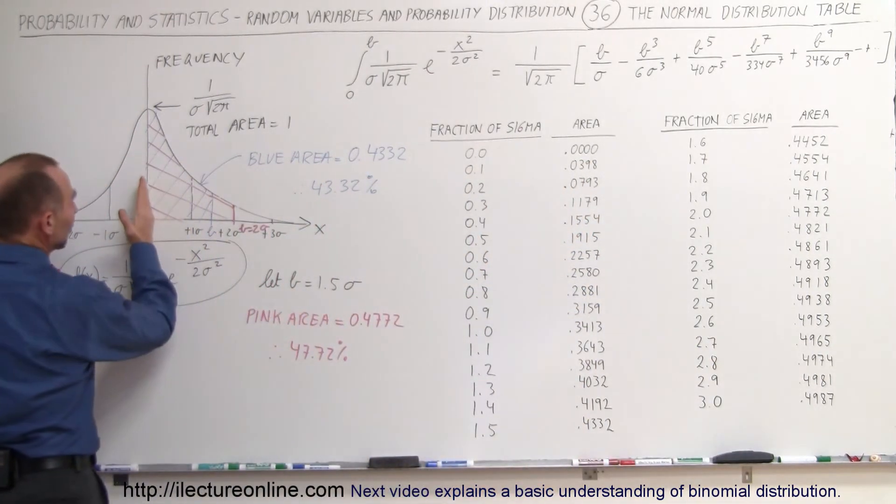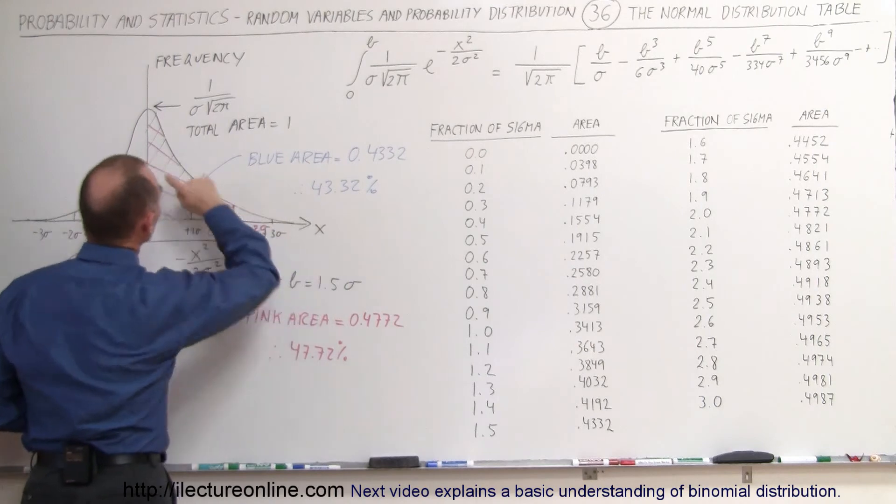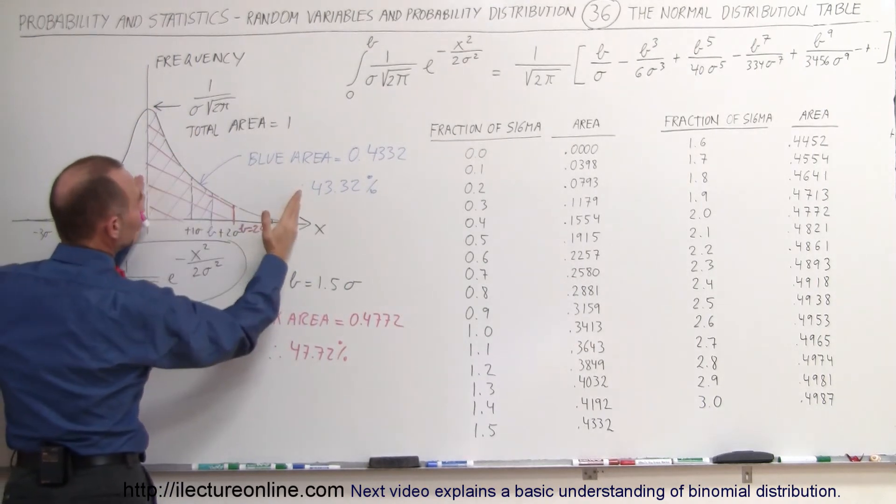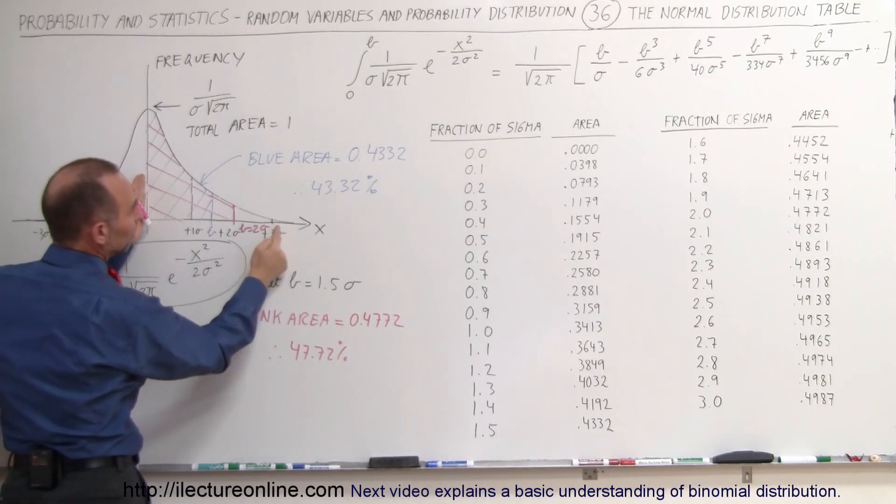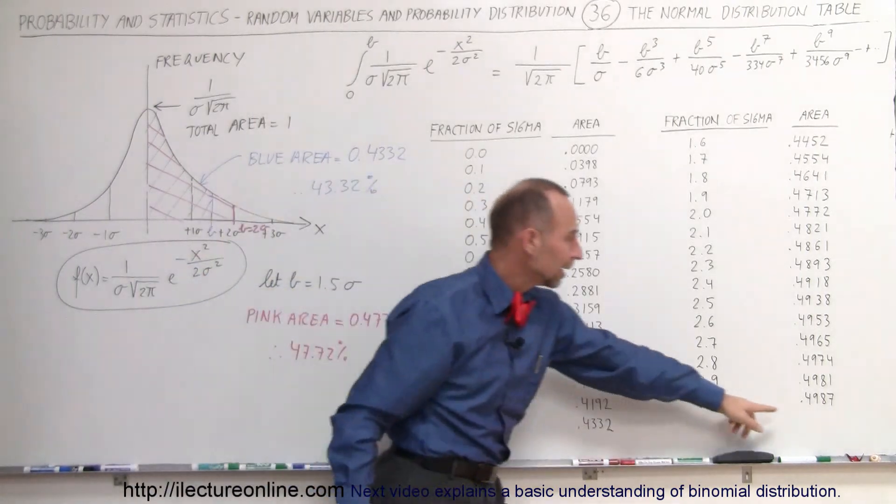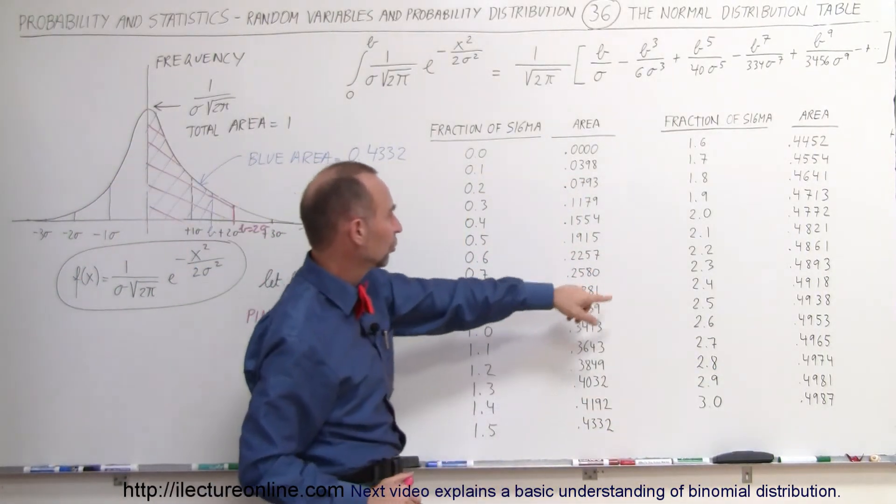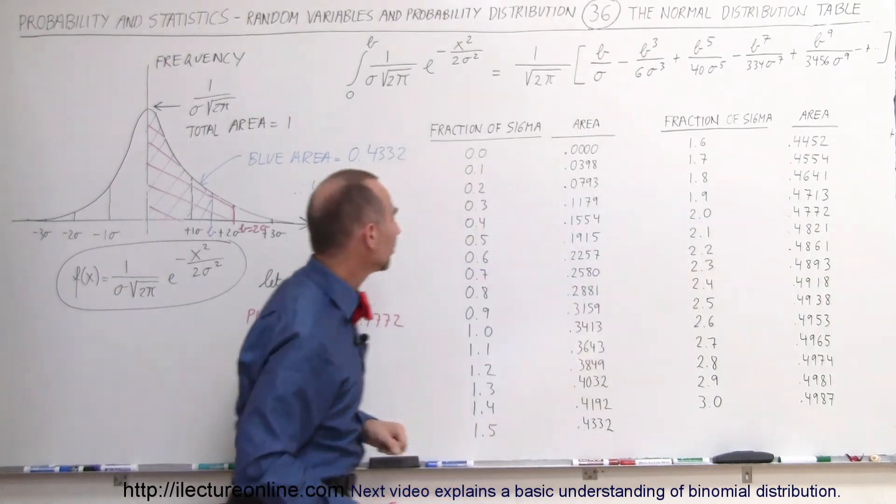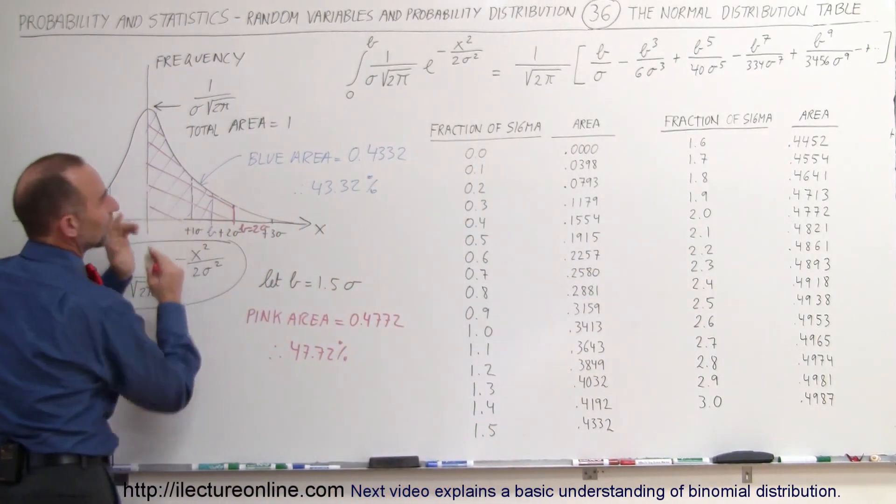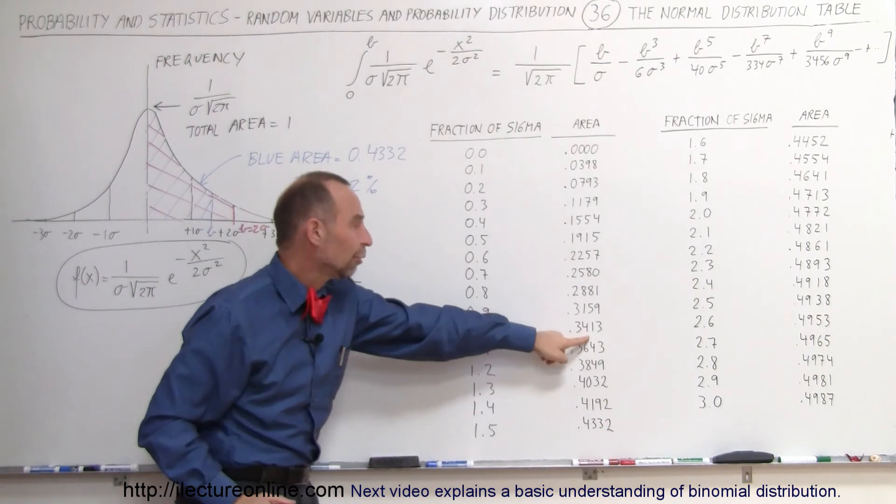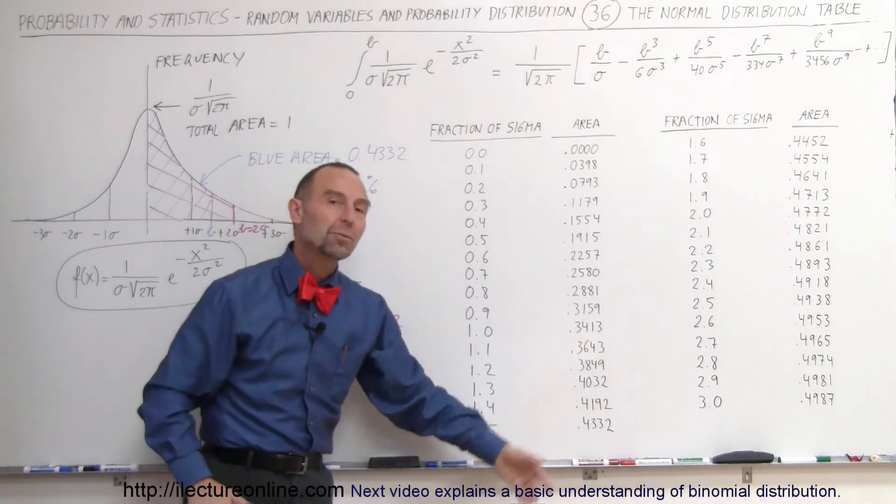And of course that makes sense, because when you go all the way out to infinity, the total area for half the curve would be one half. So when we get out to 3 sigma, the area is 49.87%. When you go out to 2 sigma, the area is equal to 47.72%. And when you go out to 1 sigma, you can see that the area here would be 34.13%. And that's how we read the table.